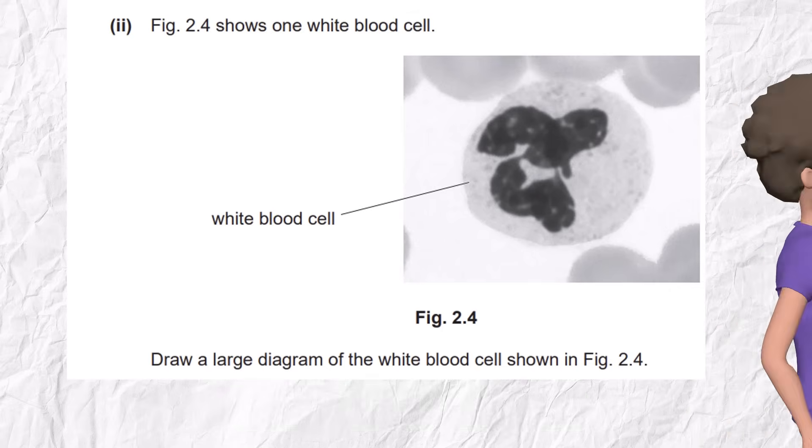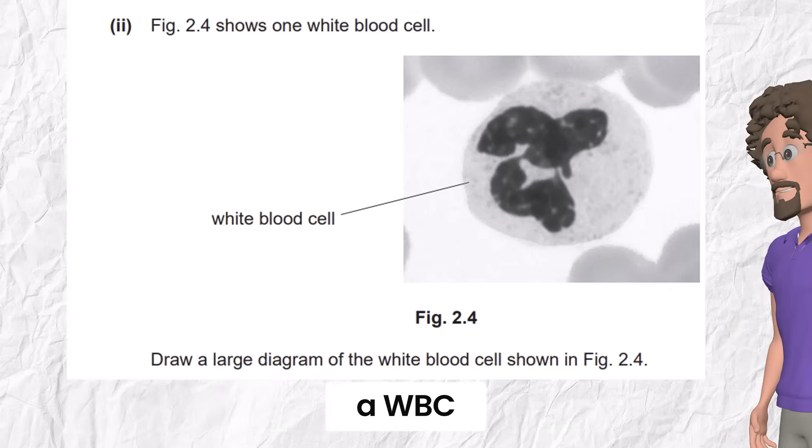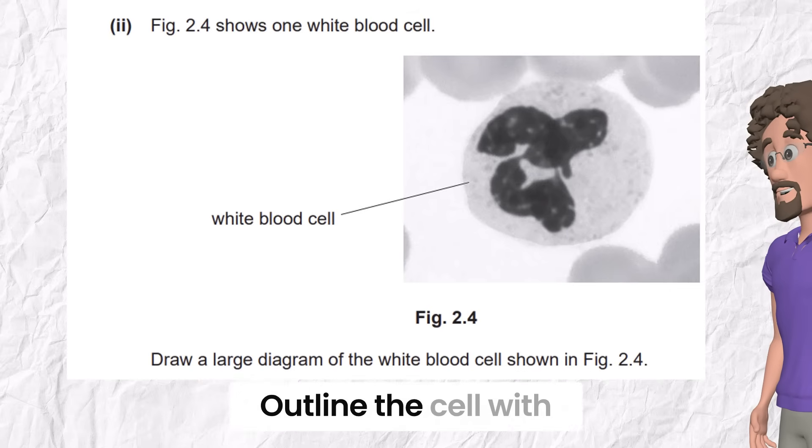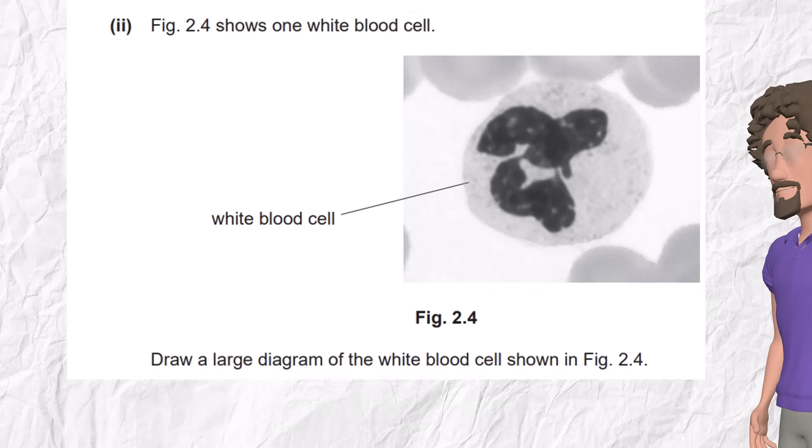Now here's another question. It's about drawing a WBC. First, start with O for outline. Outline the cell with one clean continuous line. Then S for size. Draw a big size. Then let's speak about the two points of details. The nucleus is lobed. It's a neutrophil, a type of white blood cell with a segmented nucleus.